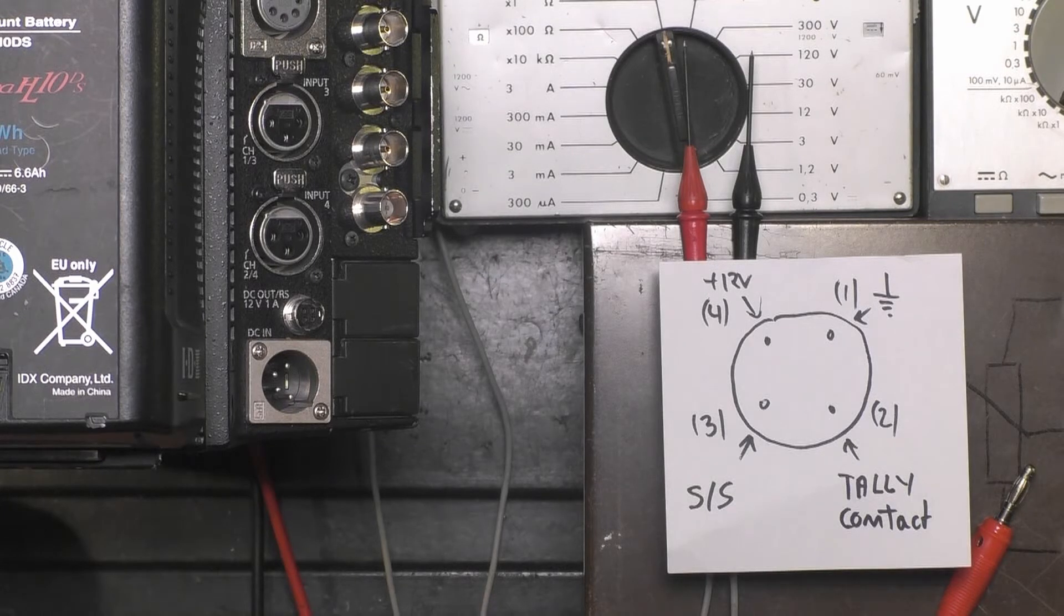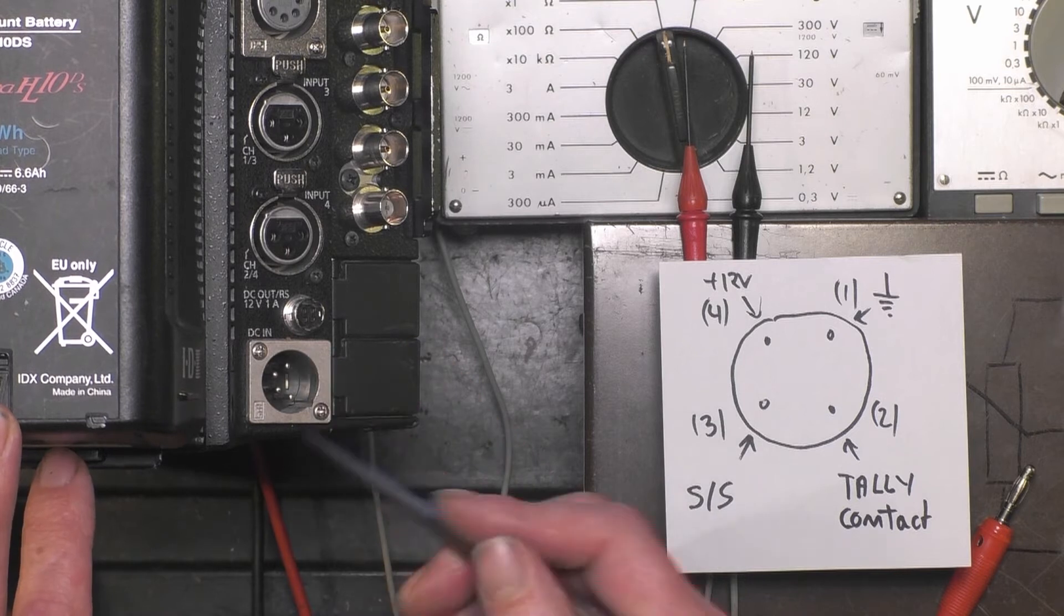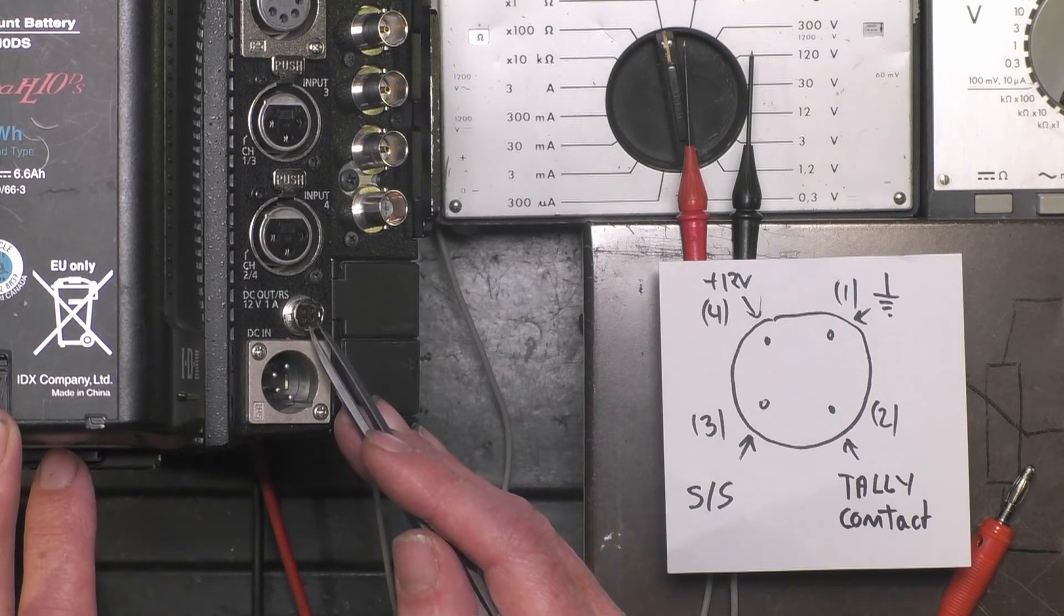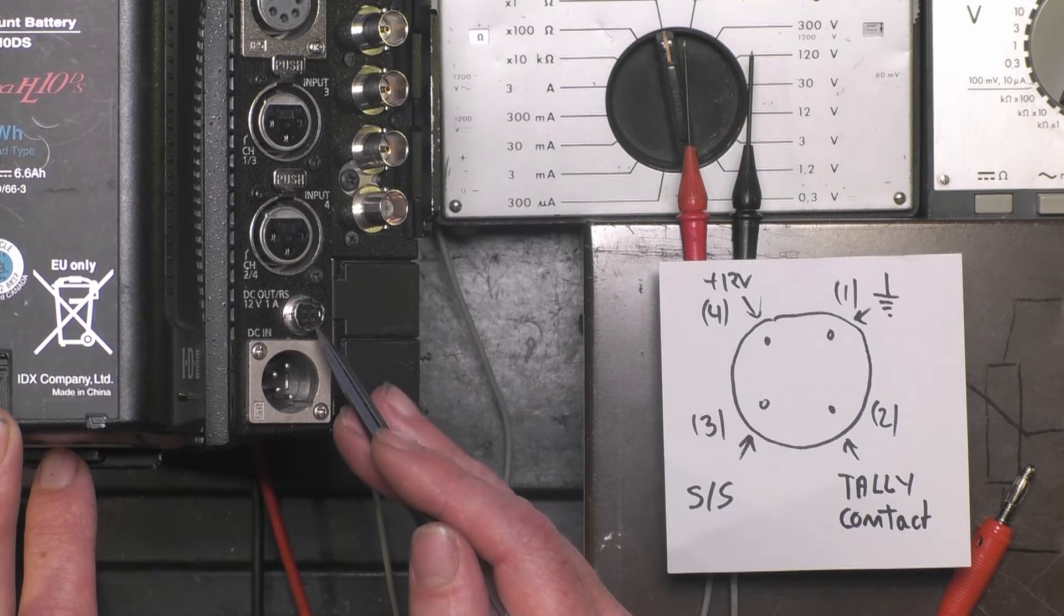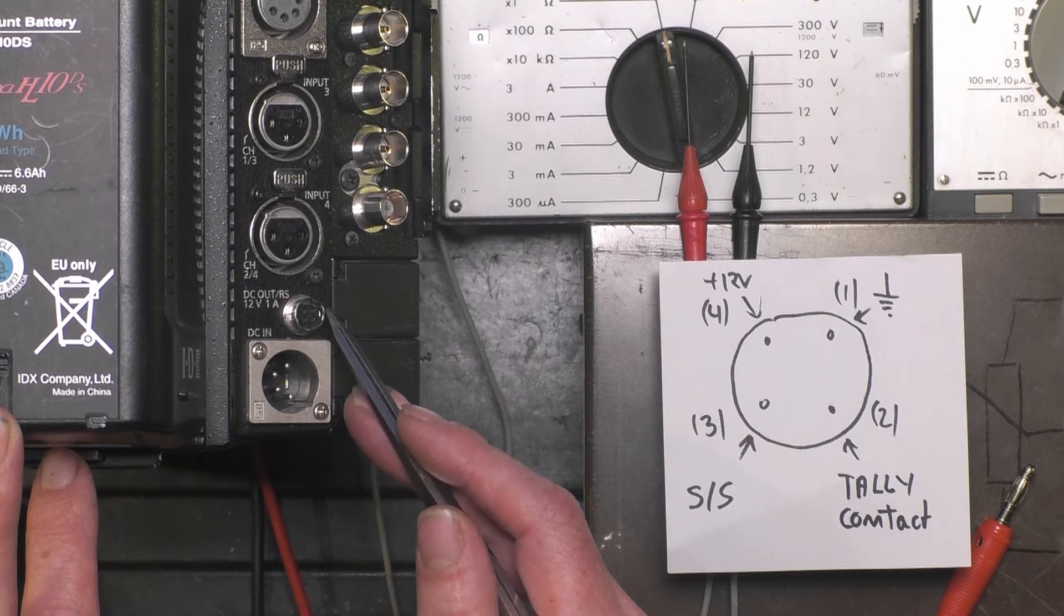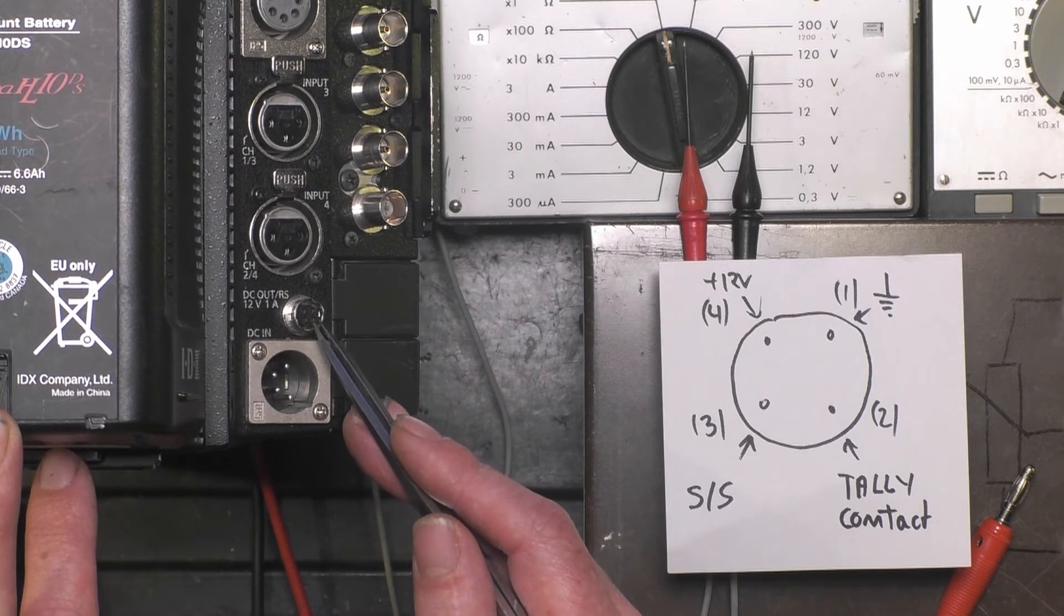Hello, in this video I want to explain to you how to check the 4-pin Hi-Rose connector we use on our Varicams. The same configuration is used on P2 ENG camcorders - the same pinning and the same connector.